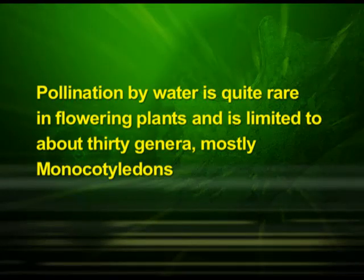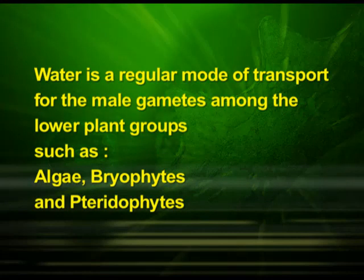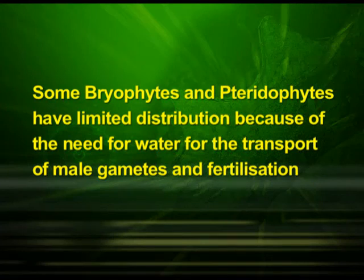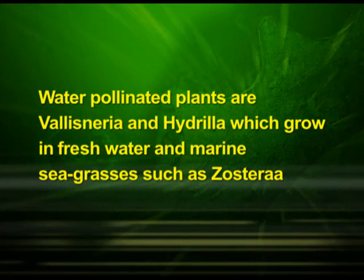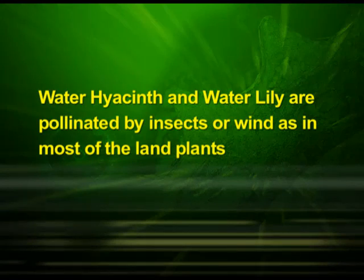Pollination by water is quite rare in flowering plants and is limited to about 30 genera, mostly monocotyledons. Water is a regular mode of transport for the male gametes among lower plant groups such as algae, bryophytes, and pteridophytes, and it is believed their distribution is limited because of the need for water for fertilization. Some examples of water-pollinated plants are Vallisneria and Hydrilla, which grow in fresh water, and several marine sea grasses such as Zostera. It is important to know that not all aquatic plants use water for pollination. In a majority of aquatic plants such as water hyacinth and water lily, the flowers emerge above the level of water and are pollinated by insects or wind, as in most land plants.